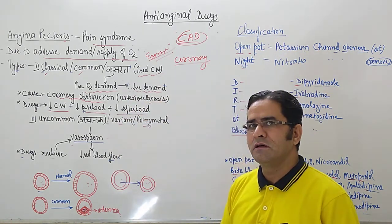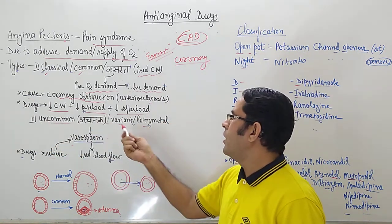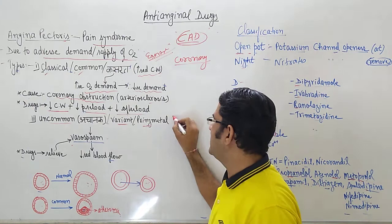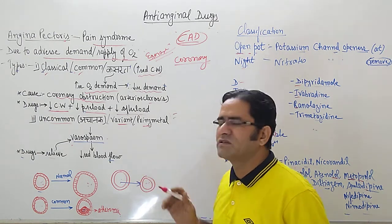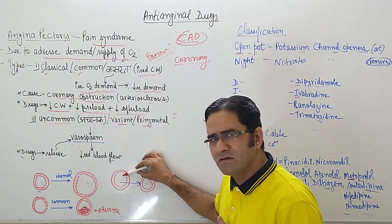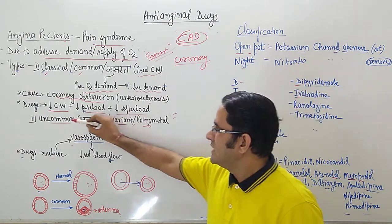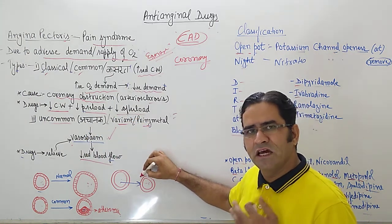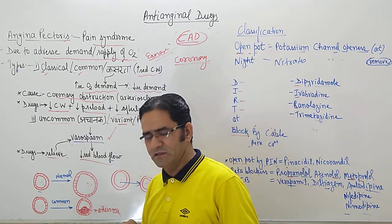The second type is uncommon angina, also called variant or Prinzmetal angina. It occurs instantaneously at any time — even when the person is sitting on a chair — because there is vasospasm. The blood vessel constricts and there is a decrease in diameter, causing decreased blood flow. The drugs used for uncommon angina relieve the vasospasm and provide relief.